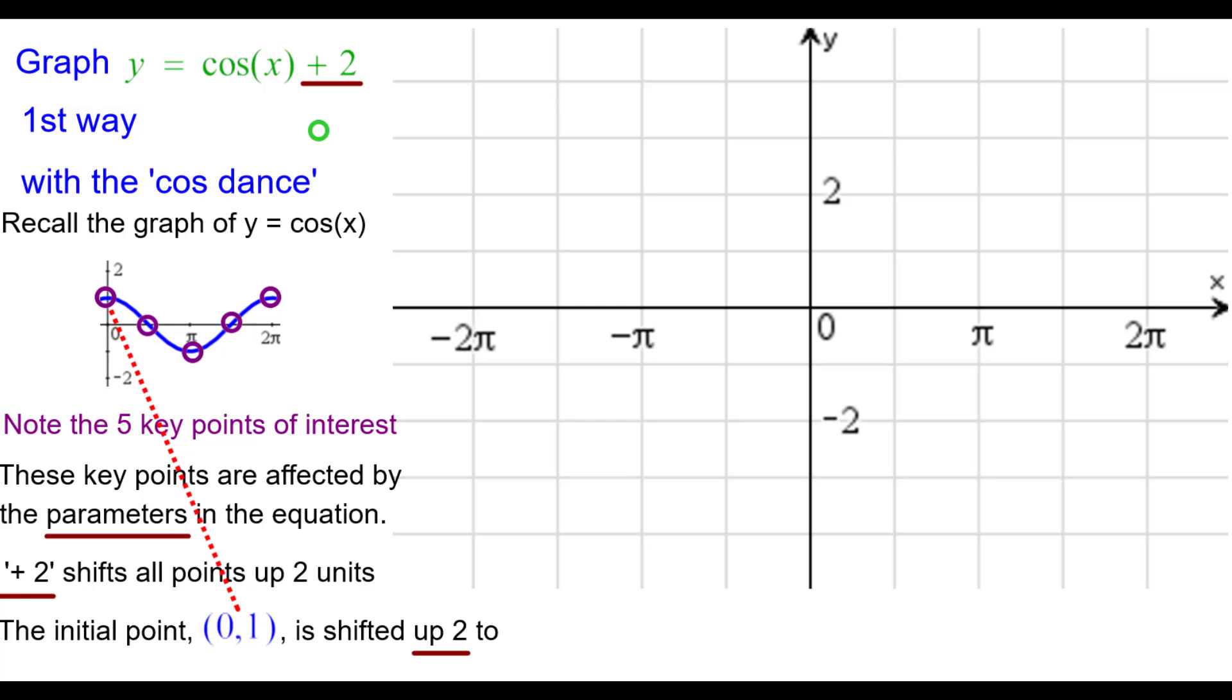So that plus two shifts all points up two units, a vertical shift. So the initial point, which is normally at zero comma one, is shifted up two units to zero comma three. So that will be my first point to plot.